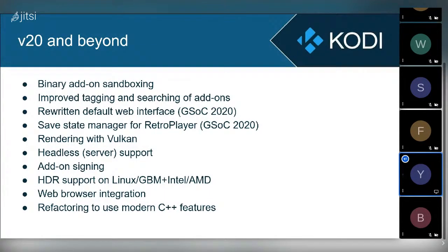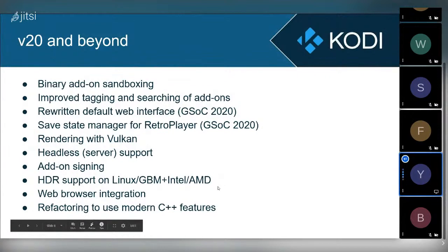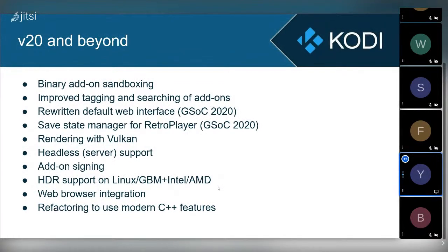Other ideas include signing of add-ons by their authors, continuing HDR support on Linux with Intel and AMD hardware which is still being integrated on the Linux kernel side, web browser integration with Chromium which has been in the works for months to years and we might see come to life in 2021, and finally making use of modern C++ features to replace custom code with new standard library equivalents, as some parts of the codebase are quite dated.